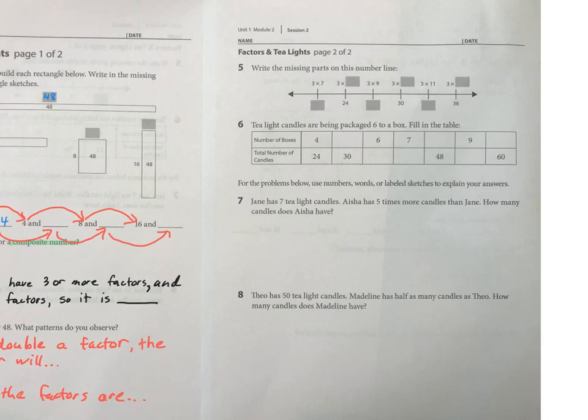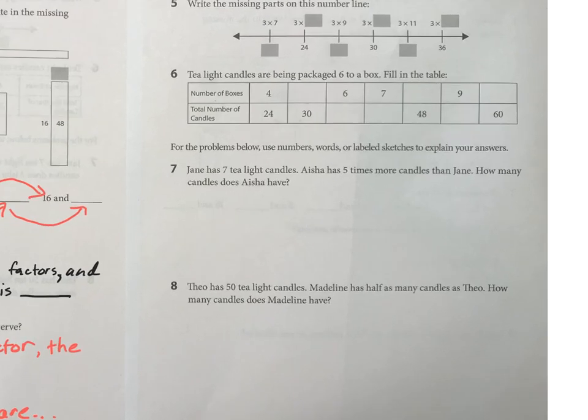Numbers five and six, I think you can do those on your own at this point. And even seven and eight, I think you'd be all right, but let's just do one of them.